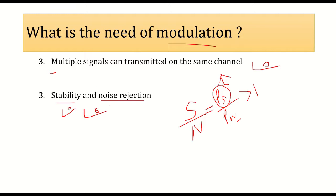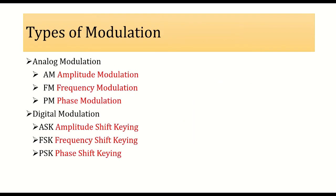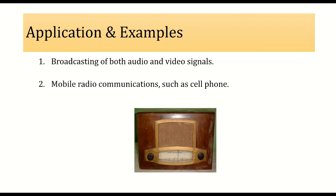These are the different types of modulation. We have two types of communication — analog and digital. In analog communication, the three types are amplitude modulation (AM), frequency modulation (FM), and phase modulation (PM). In digital communication, the three types are amplitude shift keying (ASK), frequency shift keying (FSK), and phase shift keying (PSK). Since this is a series on analog communication, we will discuss the three analog modulation schemes in upcoming lectures.